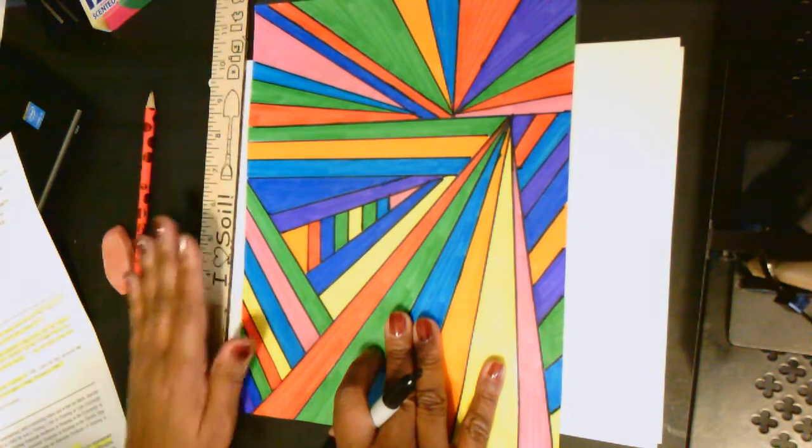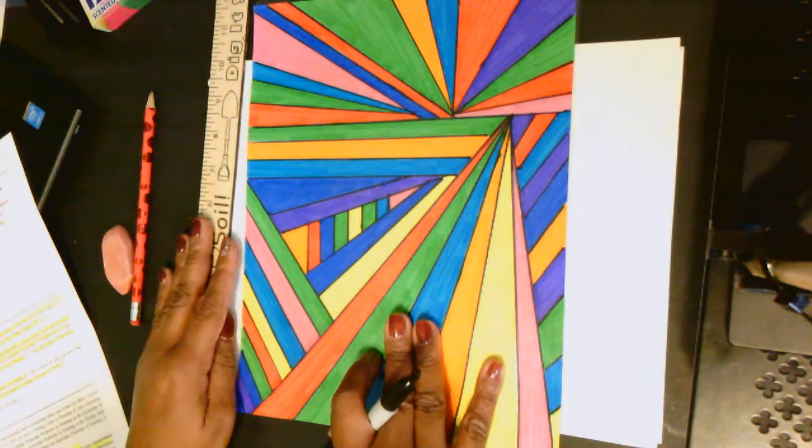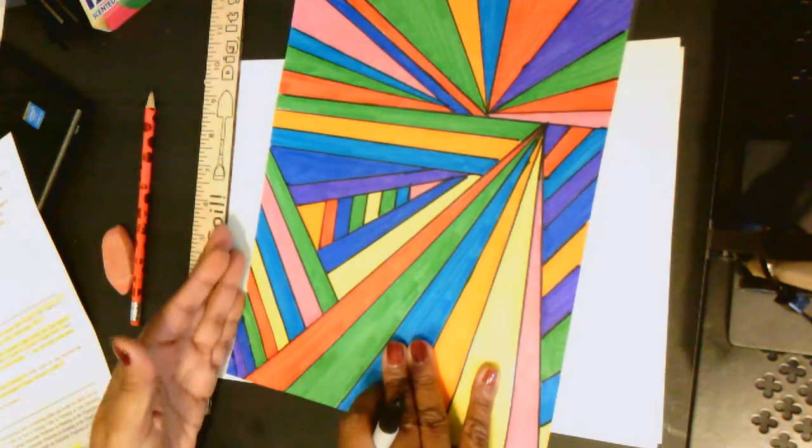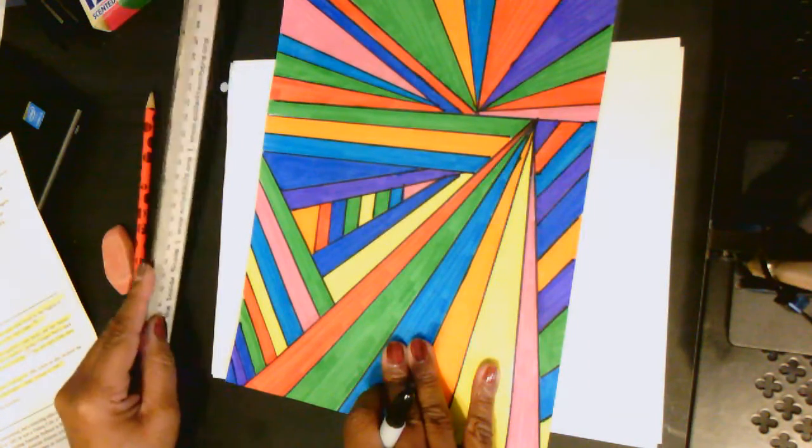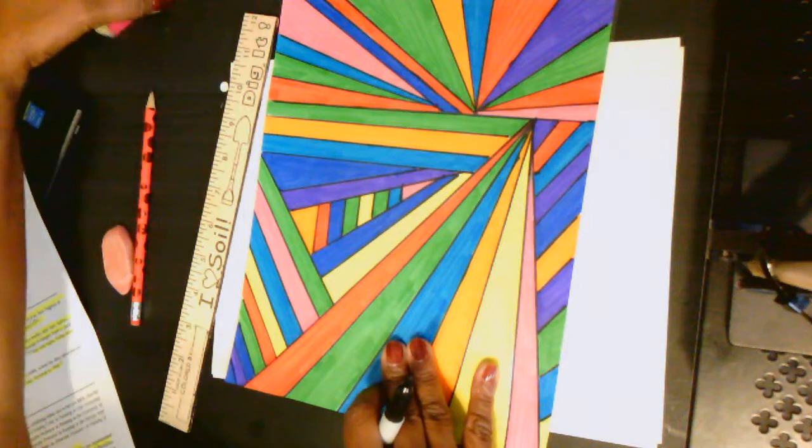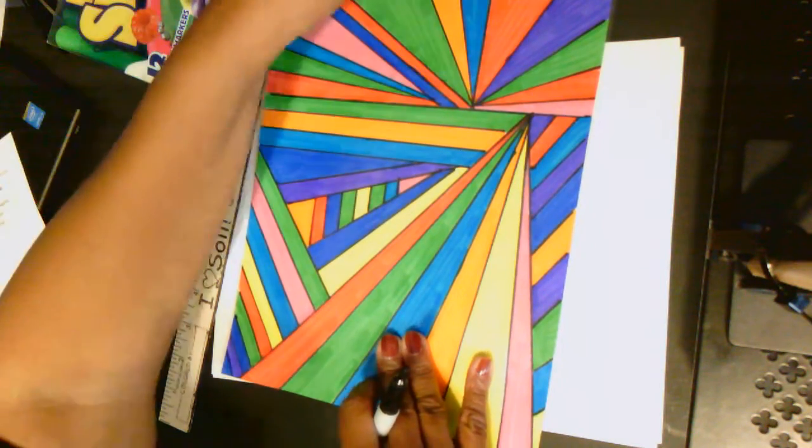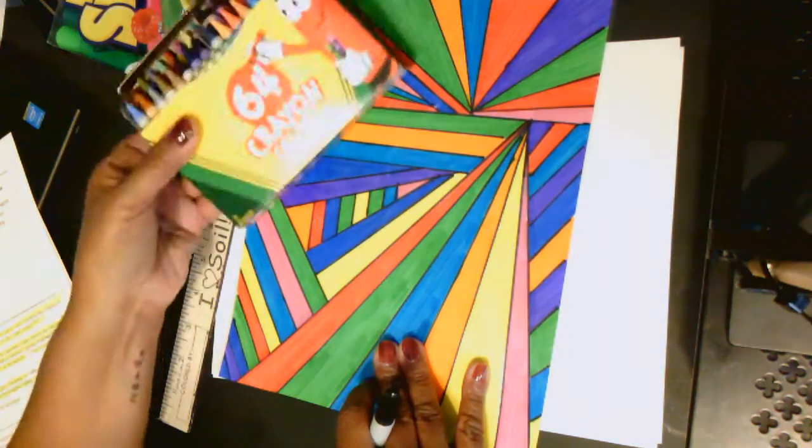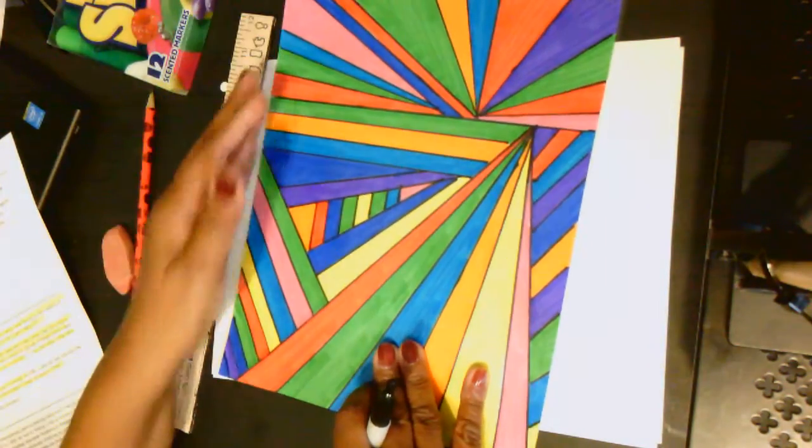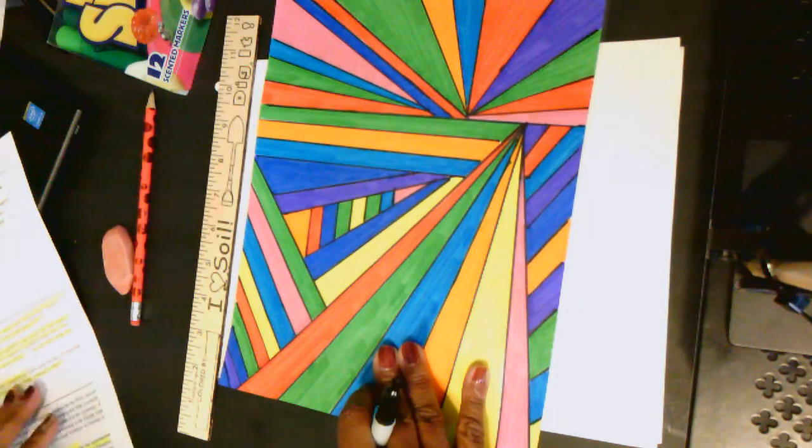I said earlier we would need a ruler or a straight edge. Anything that will help you draw a straight line will work. It doesn't have to be a ruler. It could be the side of a box, the side of your journal, the side of your crayon box. Anything you have that will help you draw a straight line.